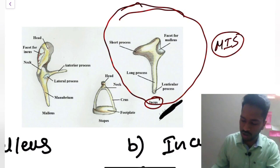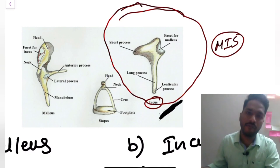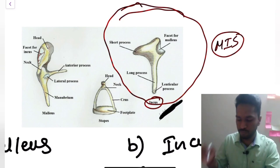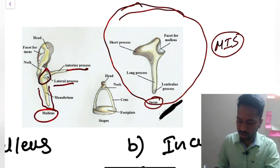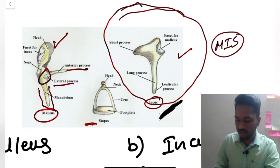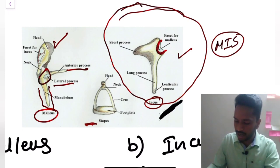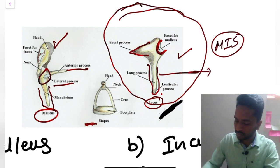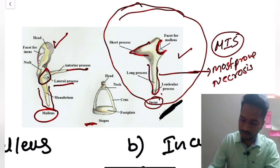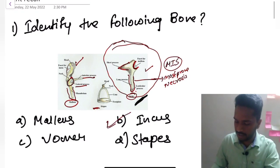It is very important to know their structure. In the FMG exam they can ask about parts of the bone — the anterior process, lateral process, or the manubrium of the malleus. You should identify all three bones. On the incus, there is a facet for the malleus, a short process, a long process, and a lenticular process. The long process of the incus is most prone for necrosis as it has the least blood supply. The answer was the incus bone.